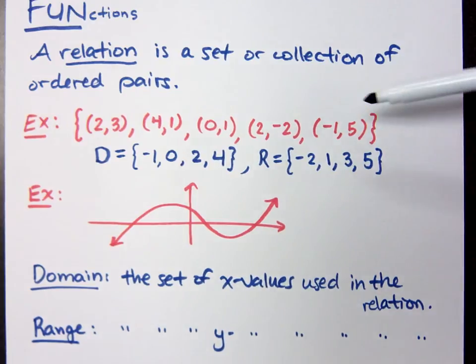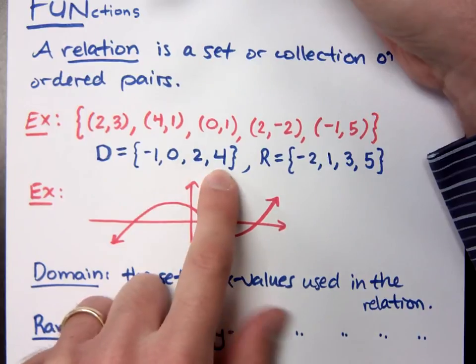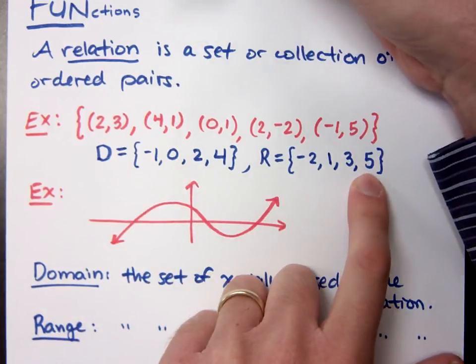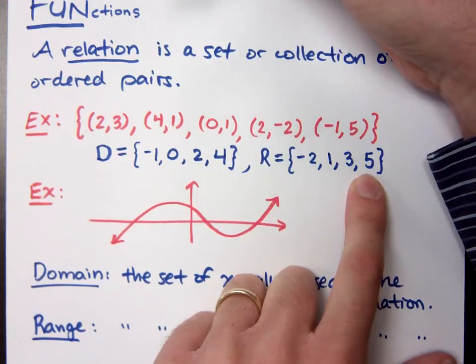What do you guys think about that? So I can look at this relation and say, you know what? These are the only x values that I'm using in that relation. These are the only y values that I'm using in that relation. That's what it means.